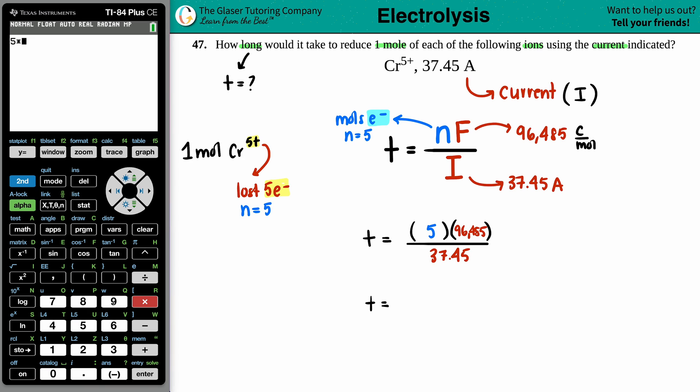Five times 96,485 divided by 37.45. Yeah, that looks good to me. Spread the answer and sig figs. We're gonna go with four sig figs here because the one mole is just a counting number, so that doesn't get counted. So I'm gonna say this is 1.288, there's your four sig figs, times 10 to the one, two, three, four.